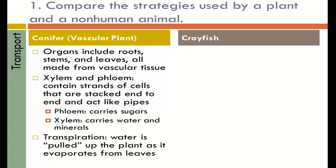Transpiration is the evaporation of water from the leaves. As water is evaporated, it gets pulled up the plant. This helps move water from the roots all the way up to the leaves.